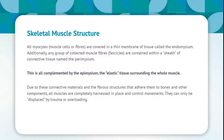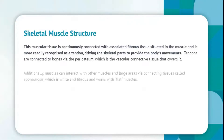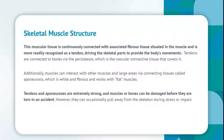Muscles can only be displaced by trauma or overloading. This muscular tissue is continuously connected with associated fibrous tissue situated in the muscle, more readily recognized as a tendon, driving the skeletal parts to provide the body's movements. Tendons are connected to bones via the periosteum, the vascular connective tissue that covers it. Additionally, muscles can interact with other muscles and large areas via connecting tissues called aponeurosis, which is white and fibrous and works with flat muscles. Tendons and aponeurosis are extremely strong, and muscles or bones can be damaged before they are torn in an accident. However, they can occasionally pull away from the skeleton during stress or impact.